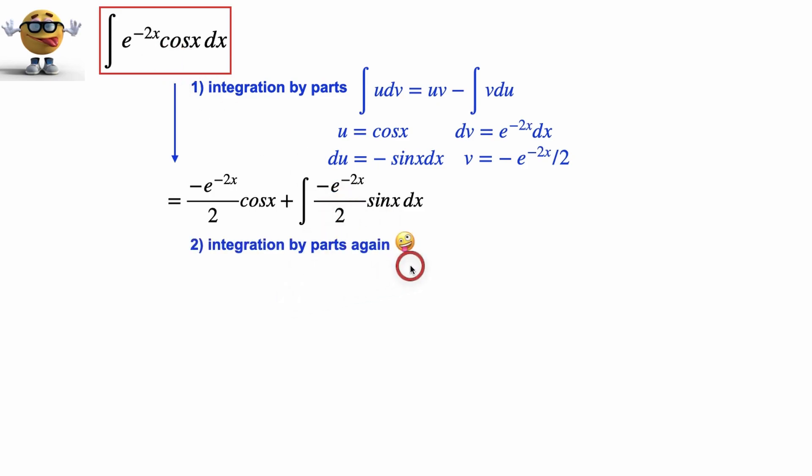We're going to use integration by parts again, believe it or not. And the reason is that if we used integration by parts once, and from a cosine x, that gave us a sine x. If we do it again, we'll exchange our sine x for cosine x, which is the same integral that we're starting with. So I'll show you what I mean.